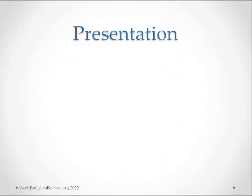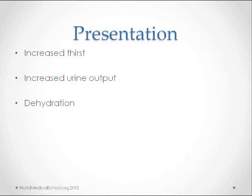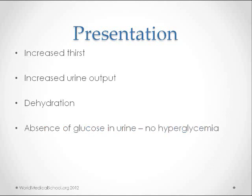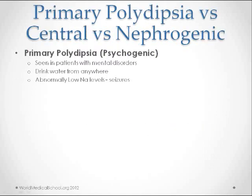Patients with diabetes insipidus present with increased thirst, increased urination, which can lead to dehydration, but there is no glucose in the urine. Primary polydipsia, also known as psychogenic polydipsia, is usually seen in patients with mental disorders. They tend to drink water from wherever they can find it, even from a toilet bowl. They can have abnormally low levels of sodium and can present with seizures.